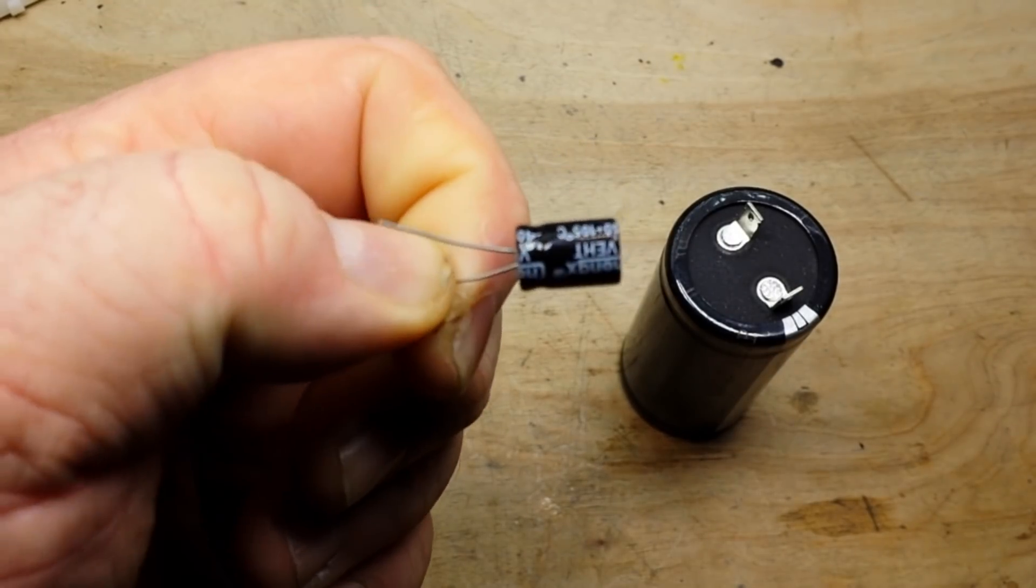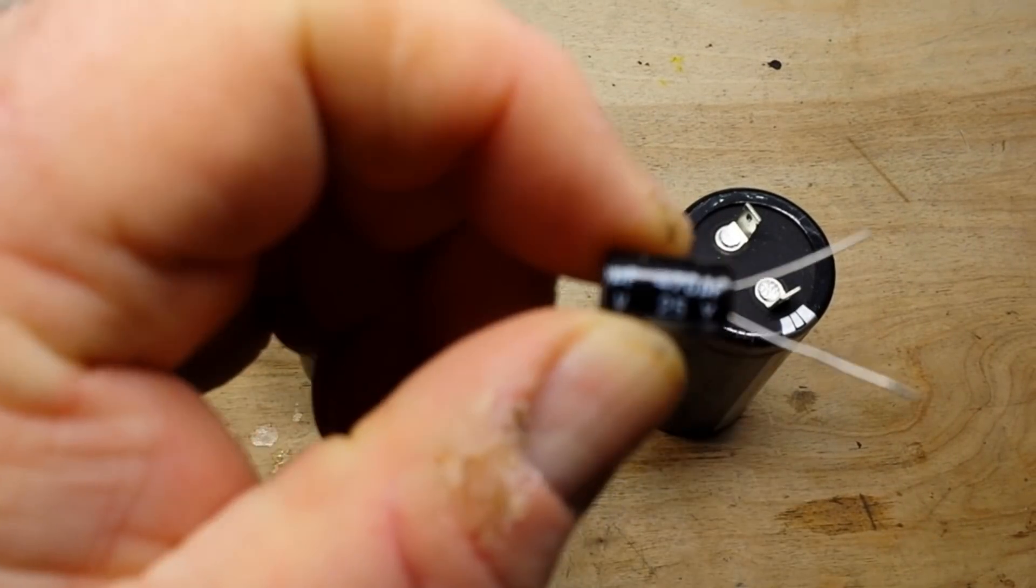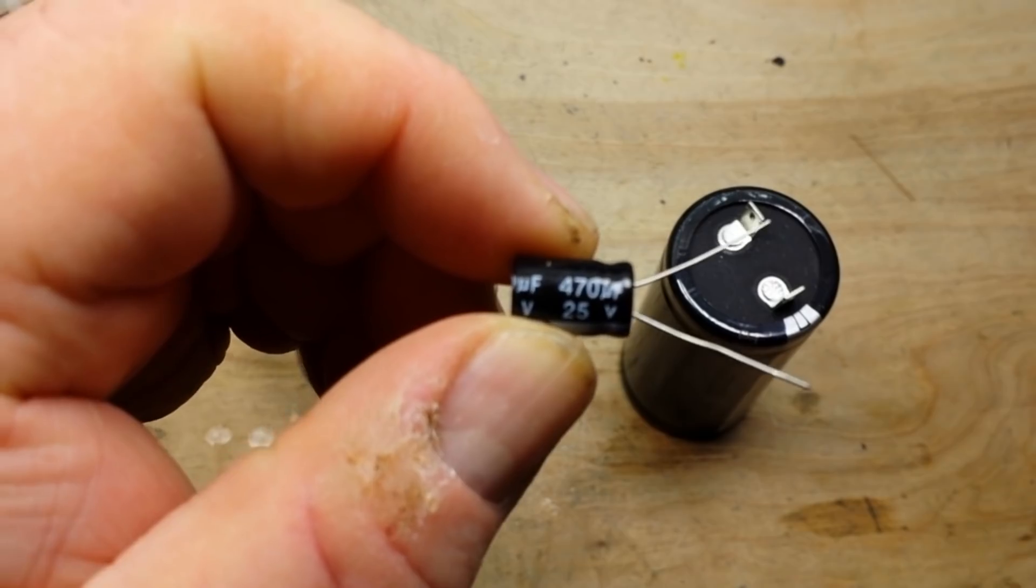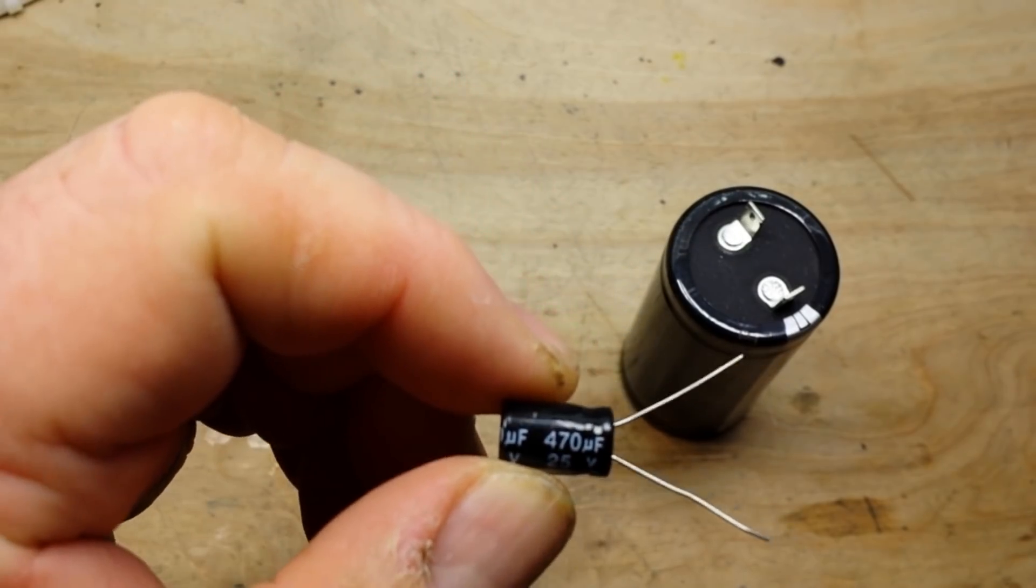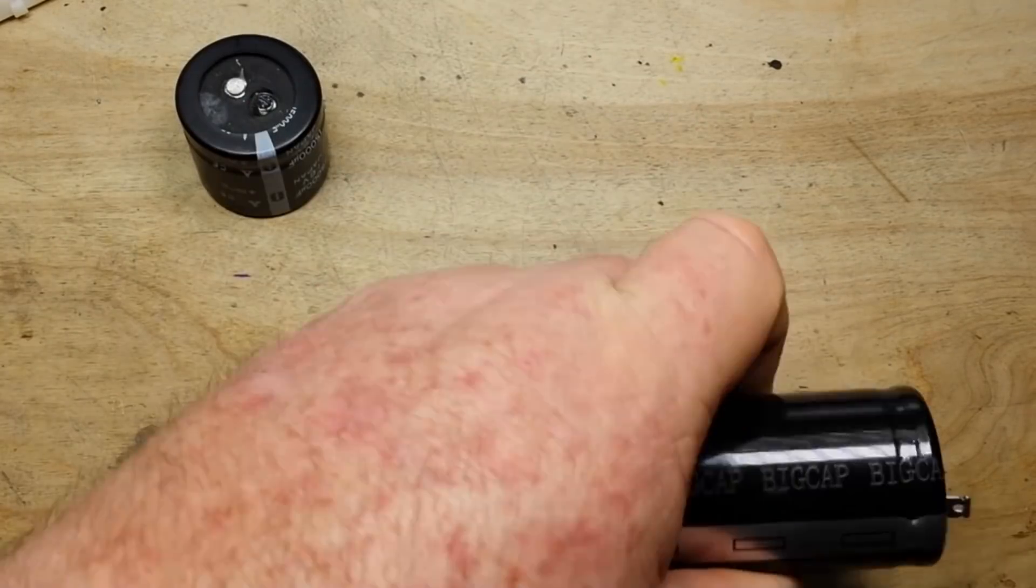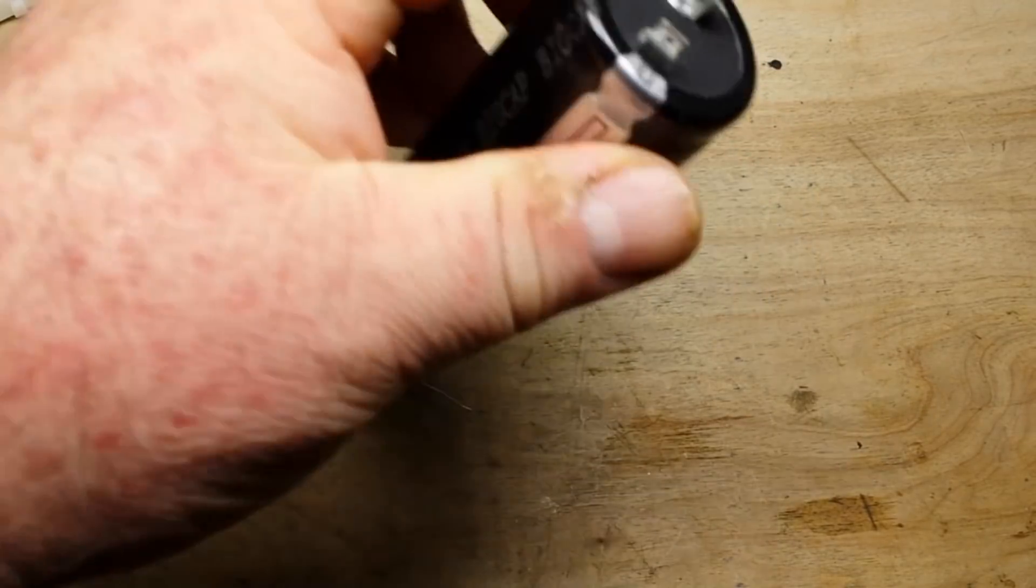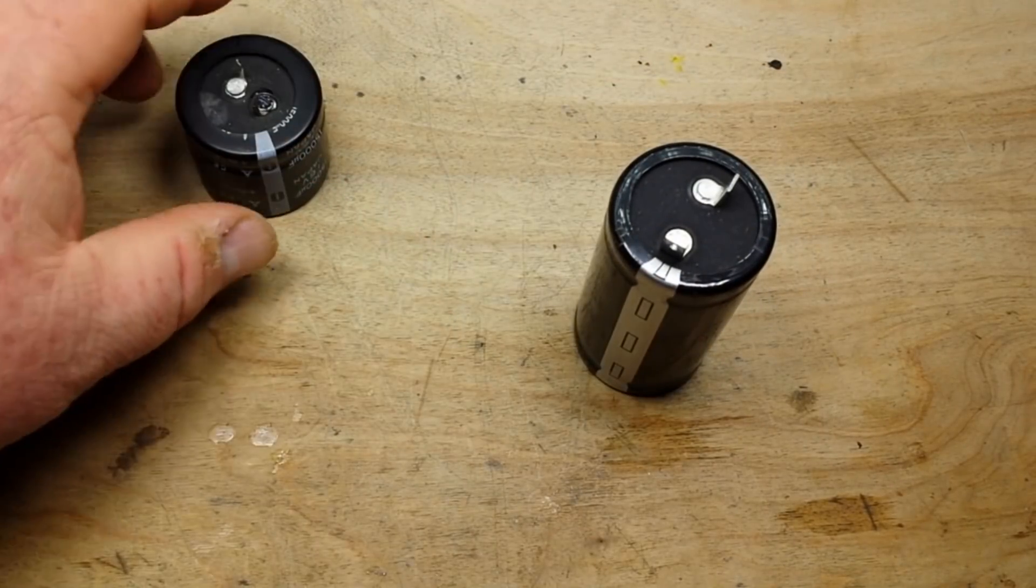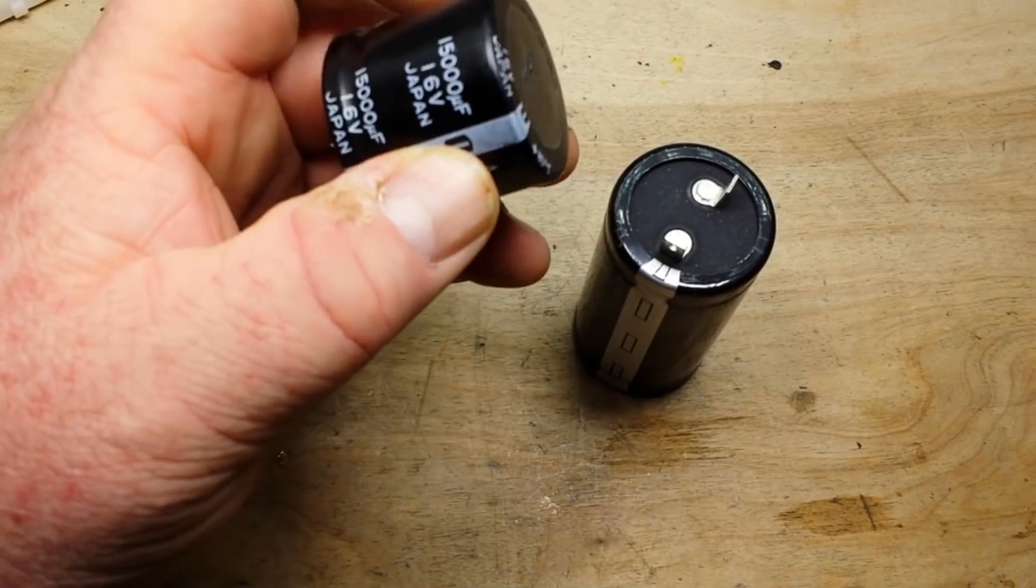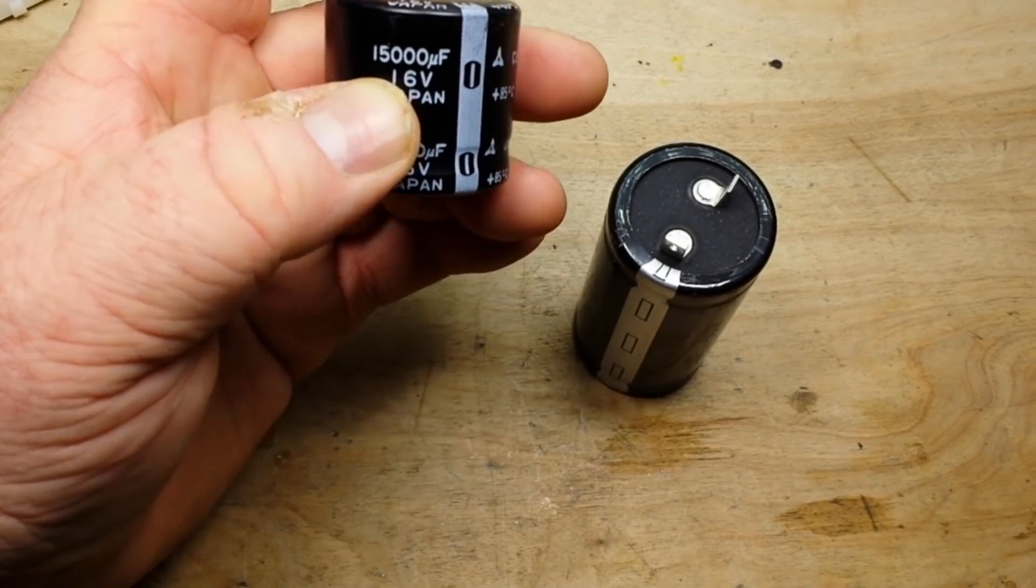Now that one's 470 microfarads, 470 millionths of a farad, compared to this one which is 500 farads - a remarkable difference. I mean even a large electrolytic capacitor like this one which is 15,000 microfarads pales in comparison to a supercapacitor.